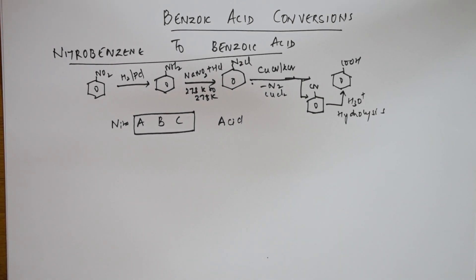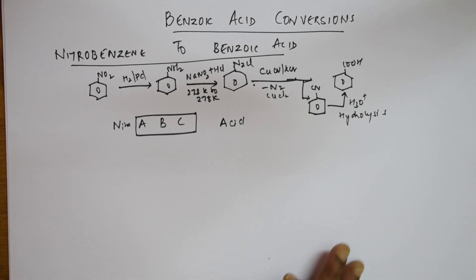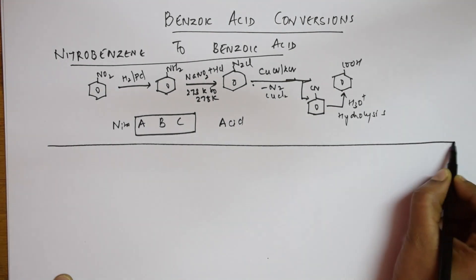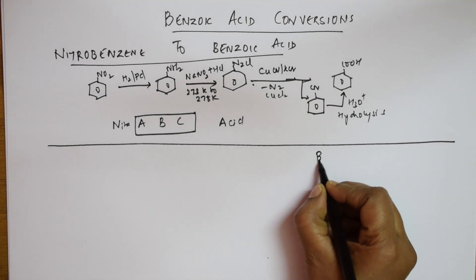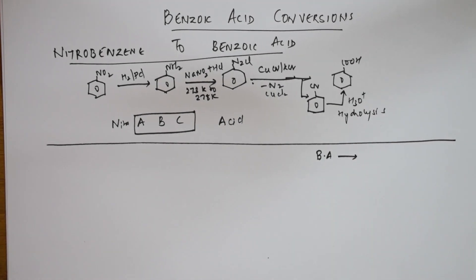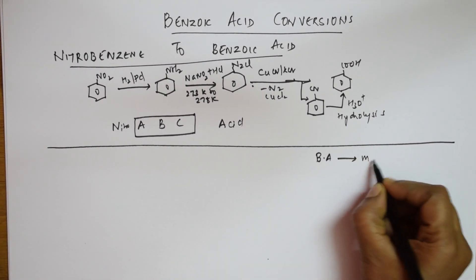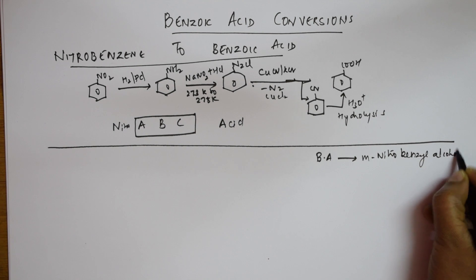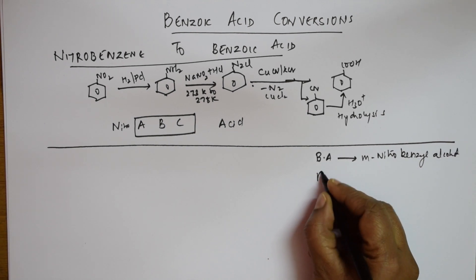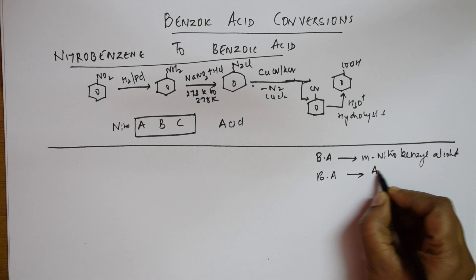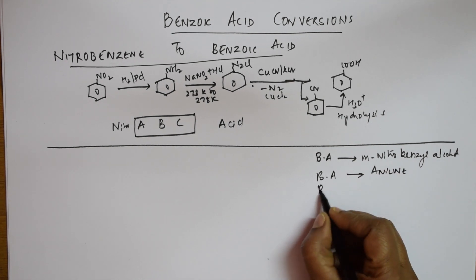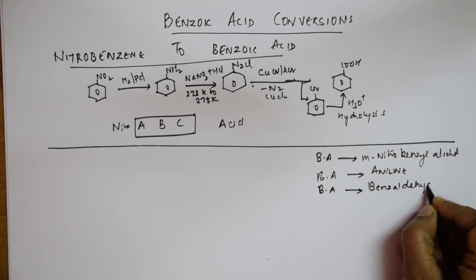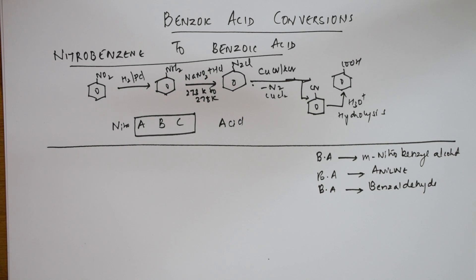Let us come back and see the next type of reactions. We are going to study all the conversions of benzoic acid. What are the different conversions in your prescribed syllabus? They may ask you to convert benzoic acid into metanitrobenzyl alcohol, or to convert benzoic acid into aniline, or to convert benzoic acid into benzaldehyde.